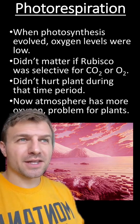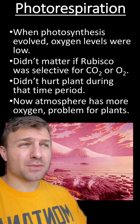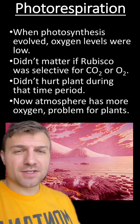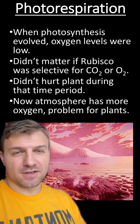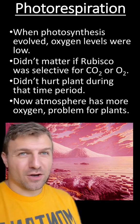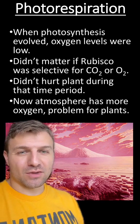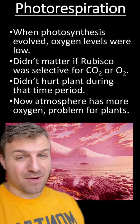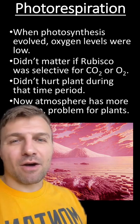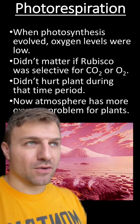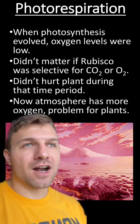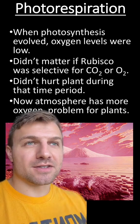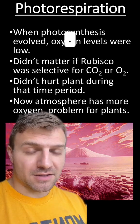The reason why some plants go through photorespiration is because when photosynthesis first evolved, oxygen levels were very low. So rubisco didn't need to be selective for CO2 over oxygen because there were such low levels of oxygen. Now the atmosphere has a lot more oxygen, and this is a problem for plants. So you might ask, how have plants adapted to this photorespiration? Well, in hotter environments, plants have evolved two different pathways, known as C4 plants and CAM plants.